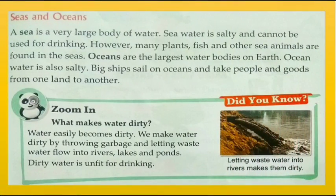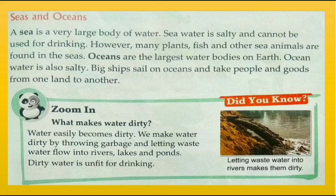Seas and oceans: a sea is a very large body of water. Sea water is salty and cannot be used for drinking. However, many plants, fish and other sea animals are found in the seas. Oceans are the largest water bodies on earth. Ocean water is also salty. Big ships sail on oceans and take people and goods from one land to another.